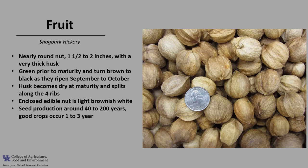Hickory begins seed production around 40 years of age and can continue to produce seed up to 200 years. Good seed crops occur at intervals of one to three years, with light to no seeds produced during the intervening years. The seeds are dispersed primarily by gravity, with some seeds being dispersed longer distances by squirrels and chipmunks.